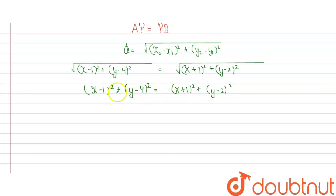Now we will open the brackets. So we know that x minus 1 whole square will be x square plus 1 minus 2x. y minus 4 whole square will be y square plus 16 minus 8y.